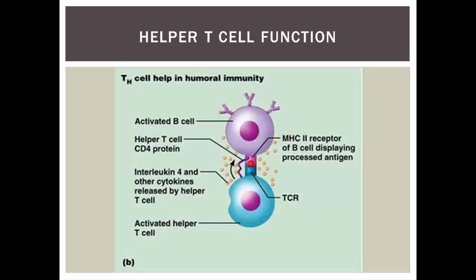Once a T-cell is activated, it becomes functional. The helper T-cell will bind to a B-cell that has become sensitized. The B-cell has presented the antigen it engulfed on its MHC class 2, and since this is a CD4 interaction, the helper T-cell can bind to that MHC class 2. The helper T-cell, along with secreting cytokines, provides the double stimulation that turns that B-cell from a naive cell into a fully activated one, ready to go fight the infection and start making antibodies.